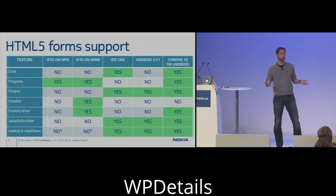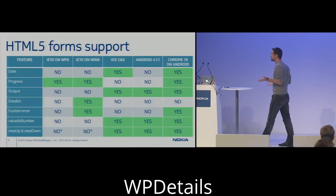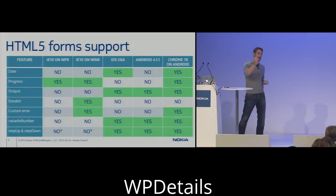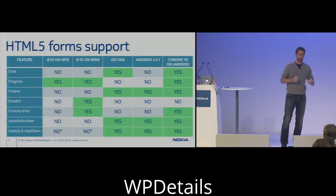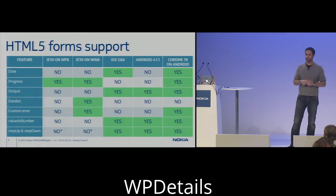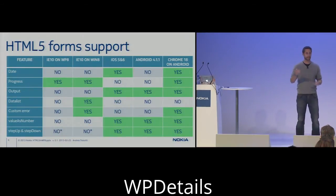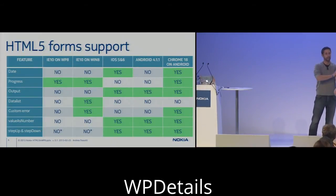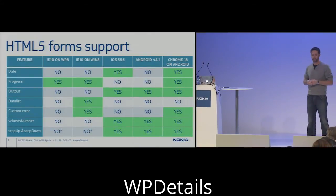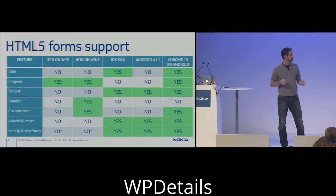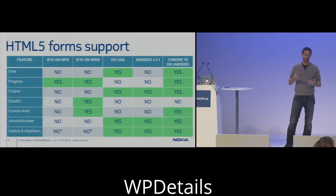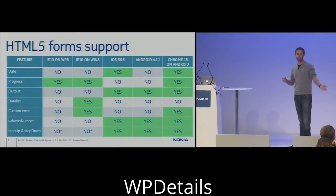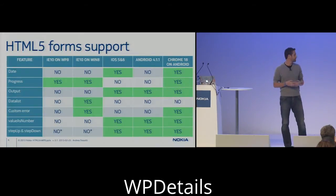Even though these things are not very well supported, you should use them. You can use them with very limited downside for the user and pretty much zero downside for you. I have a little asterisk on step up and step down for Internet Explorer. These are two JavaScript events that allow you, when you have a number field from 1 to 10 for example, to create a button that automatically increments or decrements the value. In Internet Explorer 10 it works, but only when using type range — a new type introduced with HTML5. If you're using type number or type date, step up and down won't do anything.